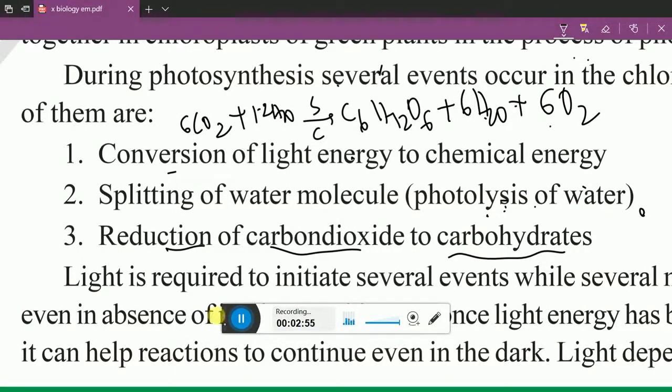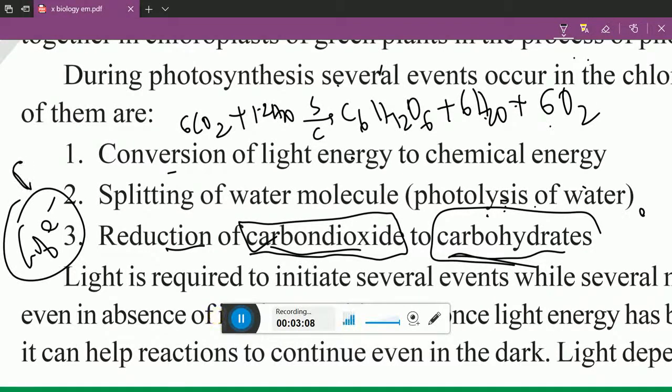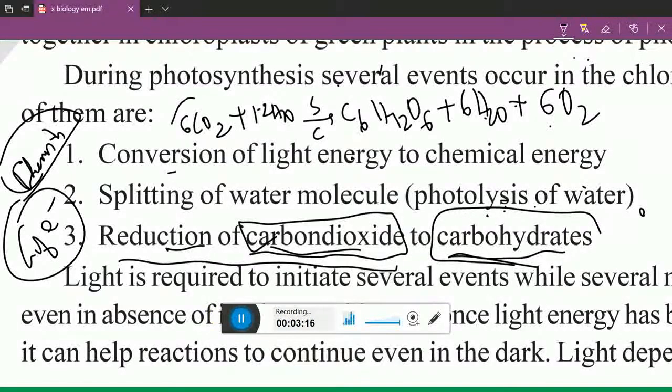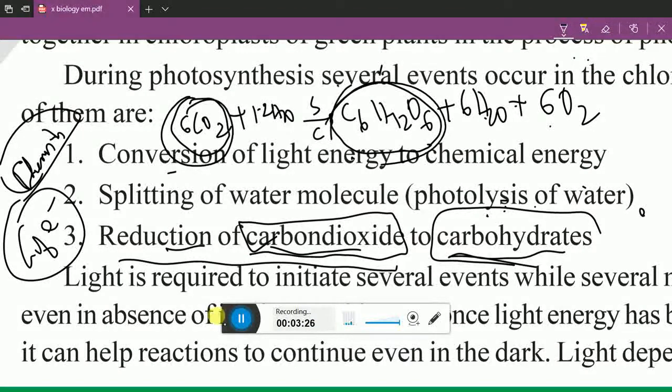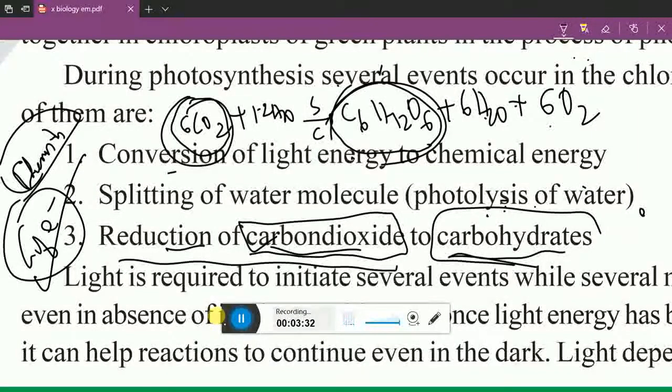So here you can see reduction. What is that? Gain of electrons. Carbon dioxide is going to form carbohydrate. It is gaining of electrons. This concept will be there in your chemistry. Reduction of carbon dioxide: here carbon dioxide is reduced to form carbohydrates. Gain of electrons. Here small compound, here big compound. It gained some electrons by the chemical equation.